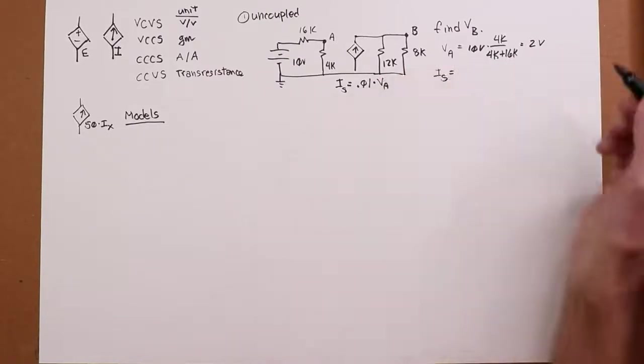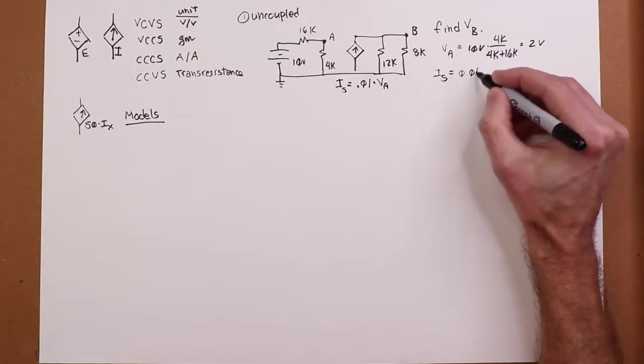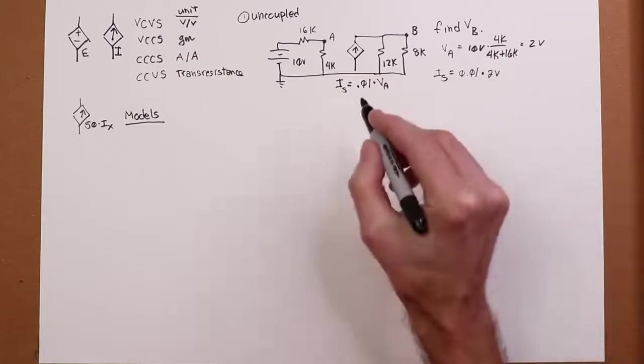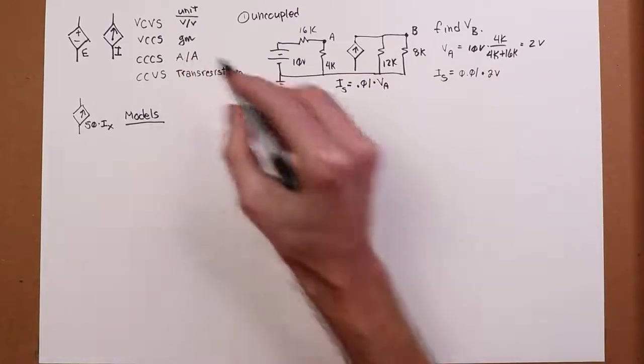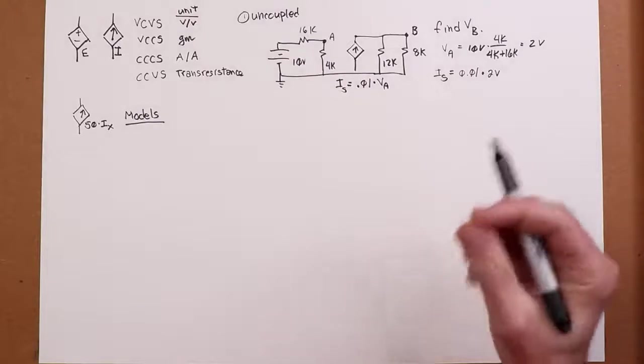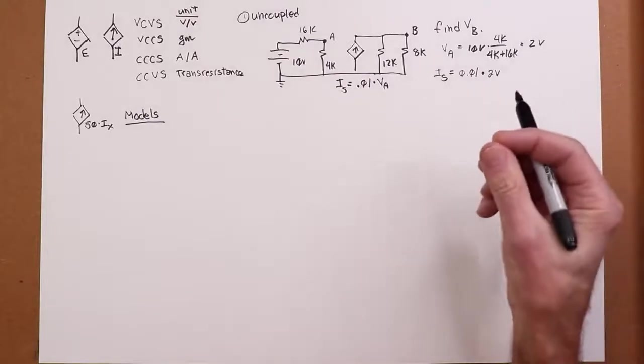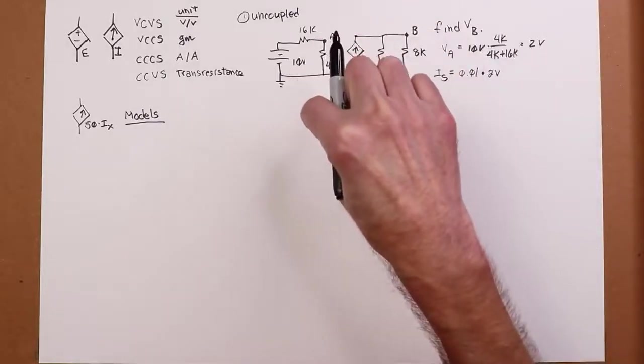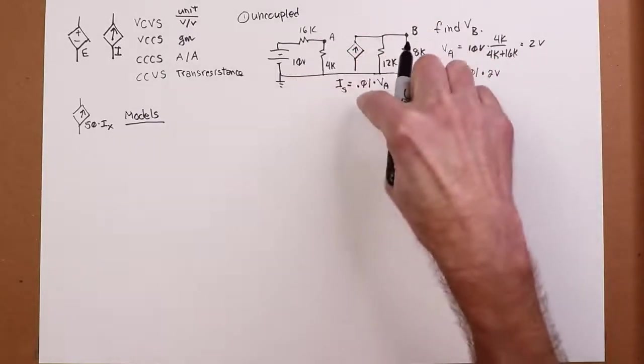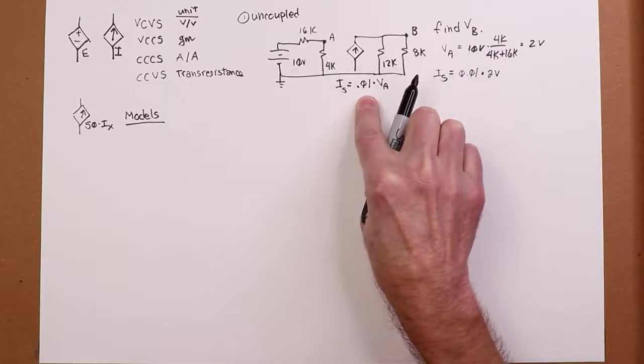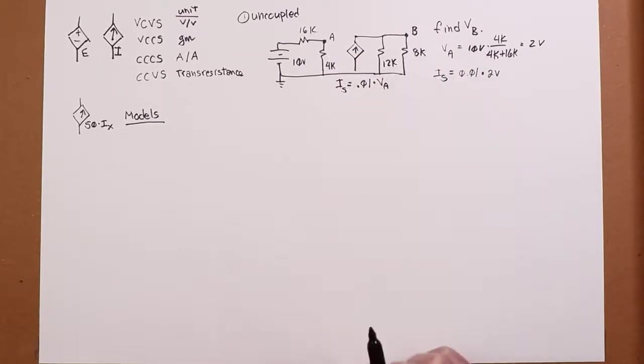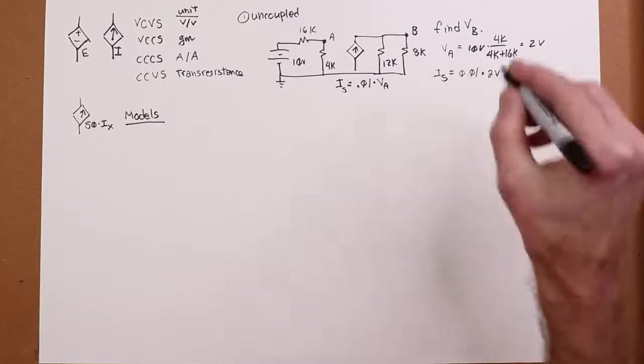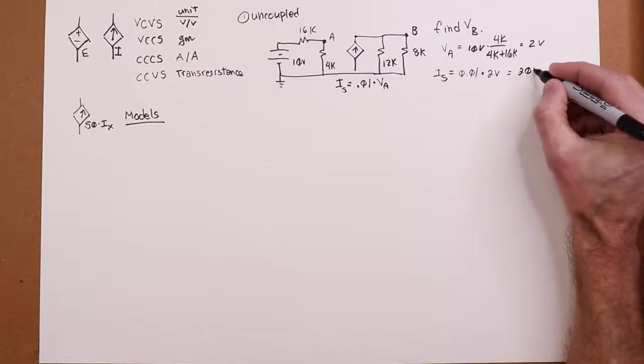We've got the 10-volt source times the thing we're interested in, 4K over the total, 4K plus 16K, so that's 20K. That's going to give us 2 volts. So if that's 2 volts, I can then figure out the value of Is, because Is is 0.01 times VA. Now remember, the unit for the 0.01, that's a transconductance, so this really does turn a voltage into a current. Volts times conductance gives us amps, Siemens.